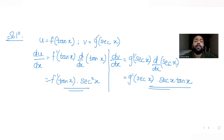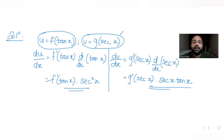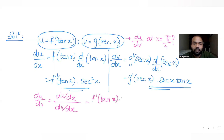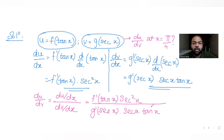We need du/dv at x = π/4. So du/dv = (du/dx)/(dv/dx) = [f'(tan x)·sec²x] / [g'(sec x)·sec x·tan x]. We can cancel one sec x from numerator and denominator, simplifying the expression.